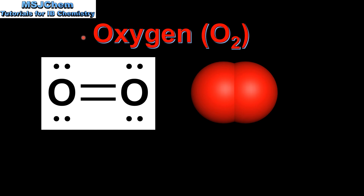Next we look at oxygen, which has the formula O2. On the left we have the Lewis structure for the oxygen molecule. On the right we have the space-filling model for the oxygen molecule. As you can see, oxygen has a double bond between the two oxygen atoms.